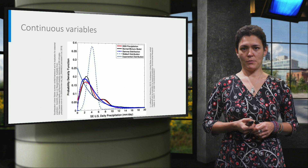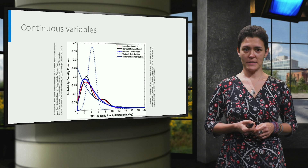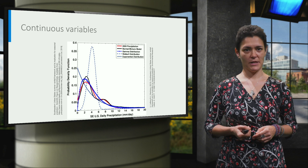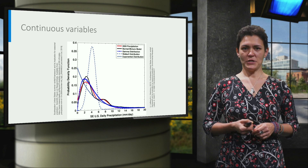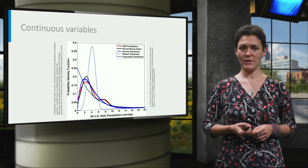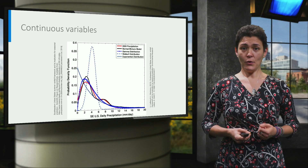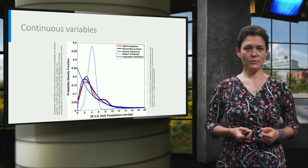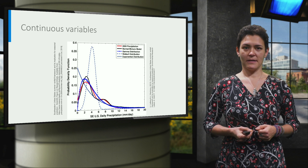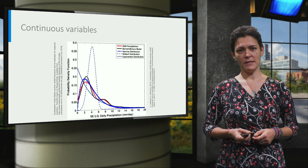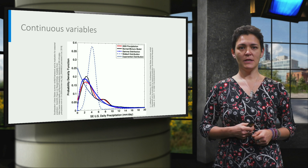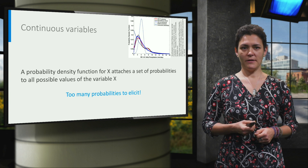There are many parametric continuous probability functions that can be used to model the phenomenon of interest, but unfortunately we won't have time to talk about them in this video. Instead, I'll show you several examples of such functions used to model the southeastern United States summer rainfall in 2009. The red curve in this figure corresponds to the daily precipitation measured in millimeters in the summer of 2009. Several models are also presented: a mixture of normals, a gamma, a Weibull, and an exponential distribution for comparison. These curves are the probability density functions, which associate probabilities to very small neighborhoods around all the values on the x-axis. When the data are absent, we turn to experts for the quantification of such curves.